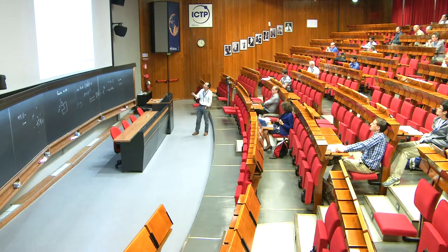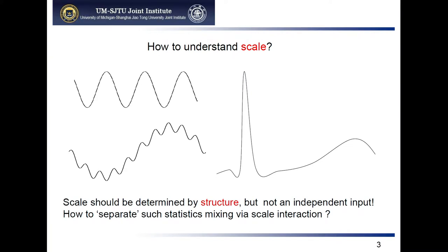Our idea started from a very simple picture. If we have profiles — velocity, temperature, scalar — for a single component, you see a single length scale. But in another case, you typically see two different structures: small-scale structures — the ripples — and another structure which is a large-scale fluctuation. So for such a signal there are two different characteristic structures.